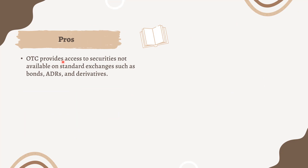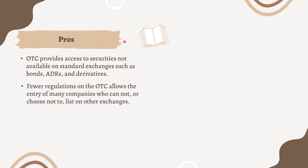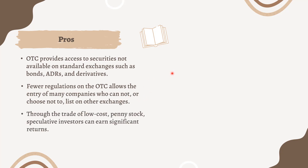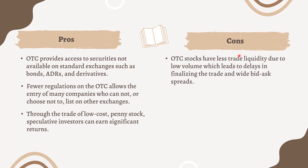The pros of the OTC market include access to securities not available on standard exchanges, such as bonds, ADRs, and derivatives. Fewer regulations on the OTC allows the entry of many companies who cannot or choose not to list on other exchanges. Through the trade of low-cost penny stocks, speculative investors can earn significant returns.